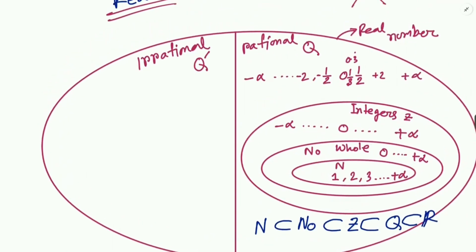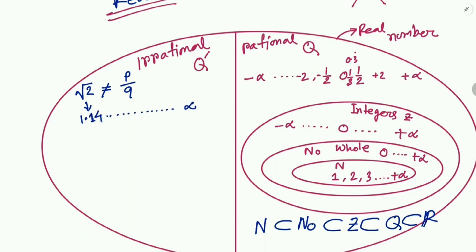Now let's talk about irrational numbers. Irrational numbers are the opposite of rational numbers — they are numbers which cannot be expressed as p/q. For example, √2 is a radical that is not a perfect square, so it is an irrational number. We cannot write √2 as p/q because after the decimal point it keeps going to infinity without repeating.